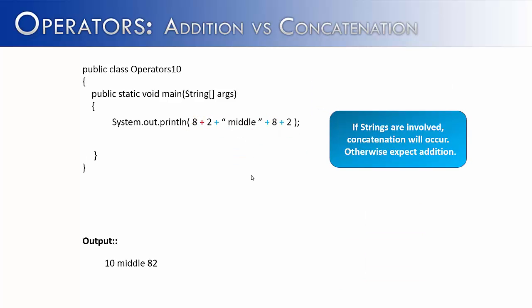Is there a way to make it say, 10 middle 10? What if I didn't want it to concatenate at the end, I wanted it to add? The way that we could do this is to add parentheses around the 8 plus 2. Parentheses change the order of operations, so the 8 and 2 would be added first, and then it would go back and do its normal order of operations from left to right. So it would print 10 middle 10 in this case.